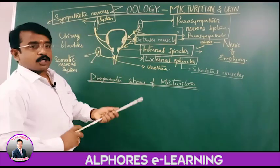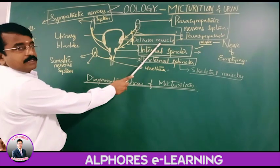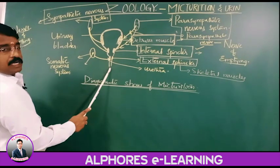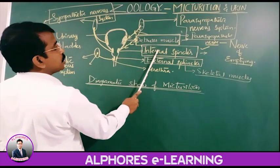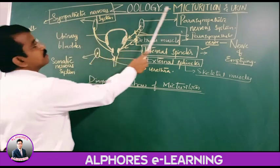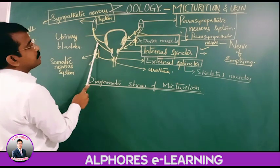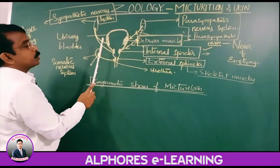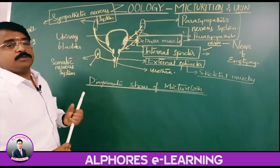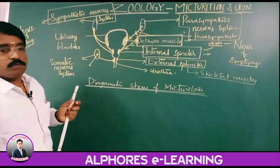Diagrammatically, the urinary bladder has detrusor muscles, internal sphincter, and external sphincter, through which the urethra passes. The detrusor muscles and internal sphincter are innervated by both the sympathetic and parasympathetic nervous systems. The nervous supply to the urinary bladder involves sympathetic, parasympathetic, as well as the somatic nervous system.